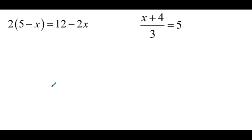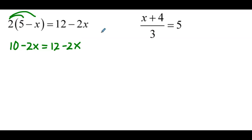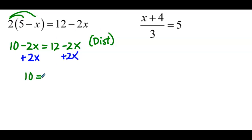Now, 2 times the quantity 5 minus x equals 12 minus 2x. First, distribute: 10 minus 2x equals 12 minus 2x — that's by the distributive property. Now add 2x to both sides by the addition property of equality, and we wind up with 10 equals 12. Compared to the last example, 10 never equals 12 — it never equals 12. So there's no value of x that makes this equation true, and we describe the solution set as no solution.